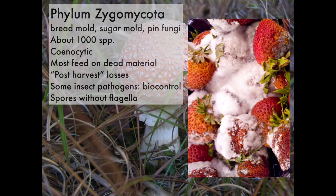Our second phylum of fungi that are cenocytic are the Zygomycota. The Zygomycota include many species of bread molds, sugar molds, or what are sometimes referred to as pin fungi. Altogether this is a fairly small phylum of about a thousand species, and they are cenocytic — their hyphae don't have regular cross walls or septations between the nuclei.